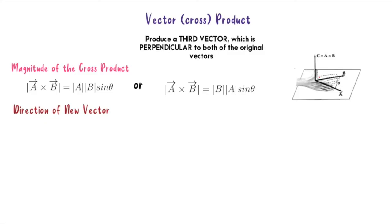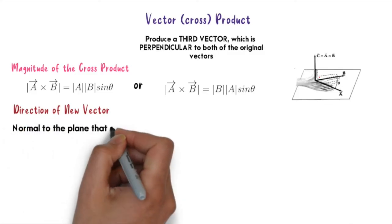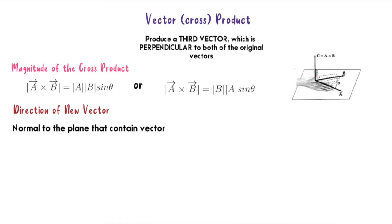Theta also refers to the angle between B and A. And next, how to find the direction of the new vector? The direction of the new vector is the normal to the plane that contains both vector A and B.